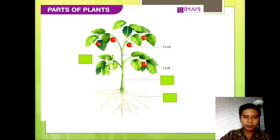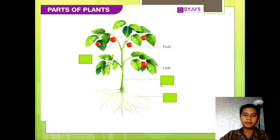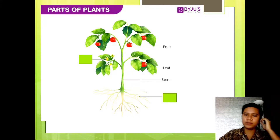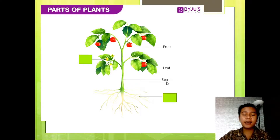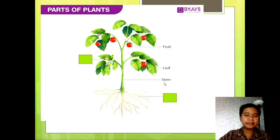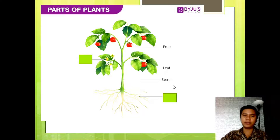For the next one, what part of the plant is this? This part of the plant is what we call stem. Everybody say stem. Can you spell stem? S-T-E-M. Stem. Very good.